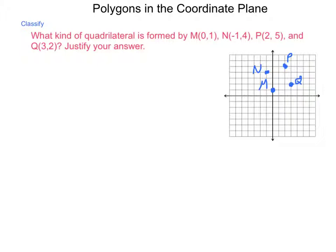So, let's begin with distances. The distance from M to N is the square root of 1 squared plus 3 squared. Well, 1 squared is 1, 3 squared is 9. So, this is the square root of 10.